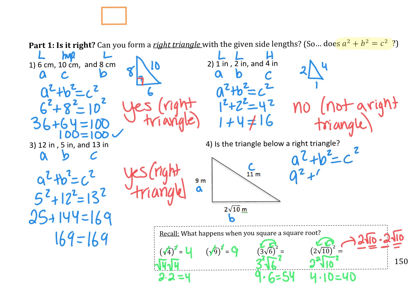So we have a² + b² equals maybe c². 9² + (2√10)² = 11². And we want to see if this is true, and if so, it forms a right triangle. This is 81 + 2² is 4, the square root of 10 squared is 10, equals 121. So is 81 + 40 equal to 121? Yes, it is. So this is, in fact, a right triangle.